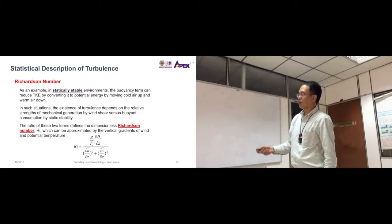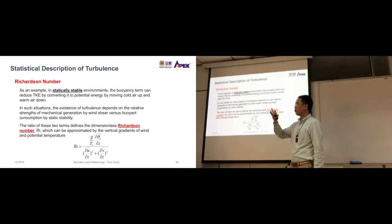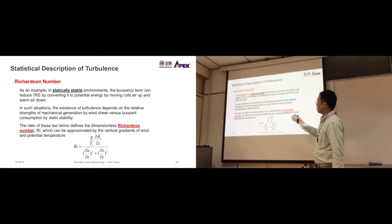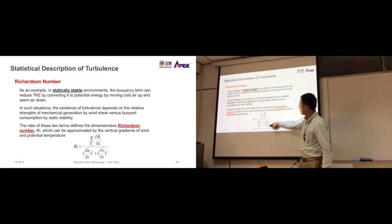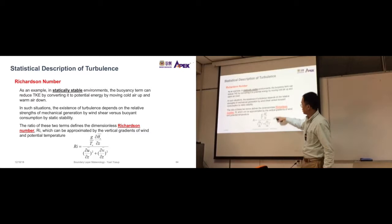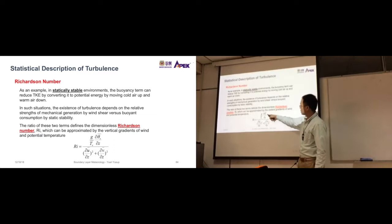So remember, Richardson number is just the ratio of two terms. One is the wind shear term and the other is the buoyancy term. So here we see the two ratios, this term and this term here. This is the buoyancy term, while this is the mechanical term. And it says here, vertical gradients of wind and potential temperature. So gradients.